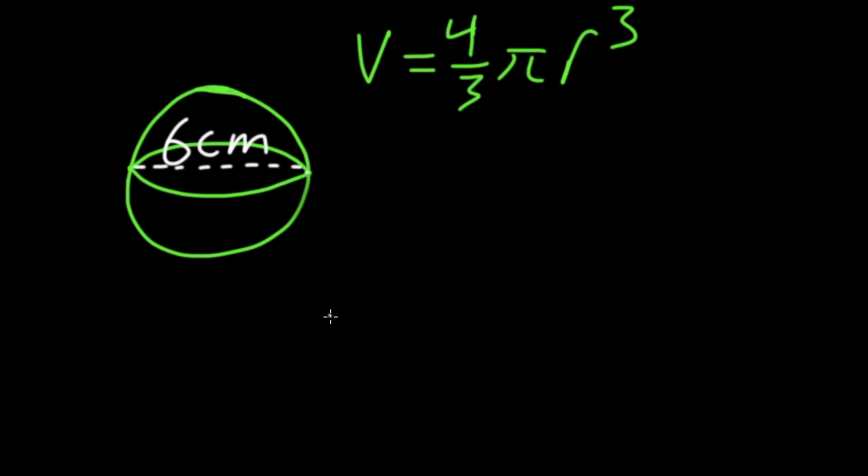Once you have your radius, you can use this formula by popping in your radius for r. So if we do that, we have volume equals 4 over 3 pi and our radius is 3 as we just calculated because it's half our diameter and that's cubed.